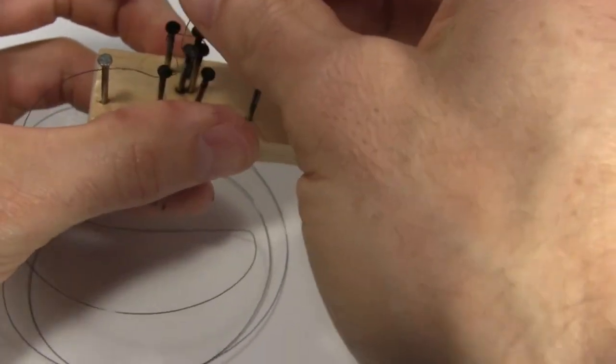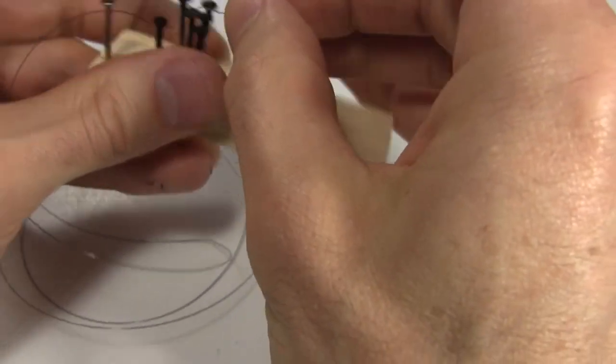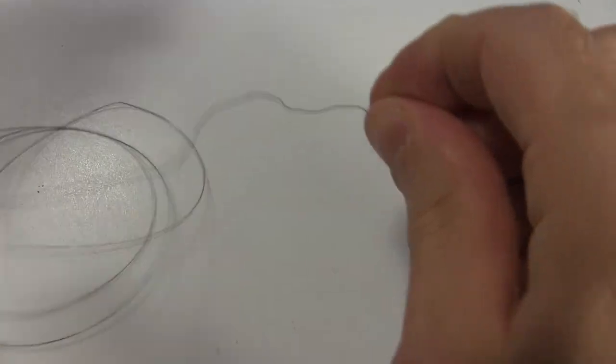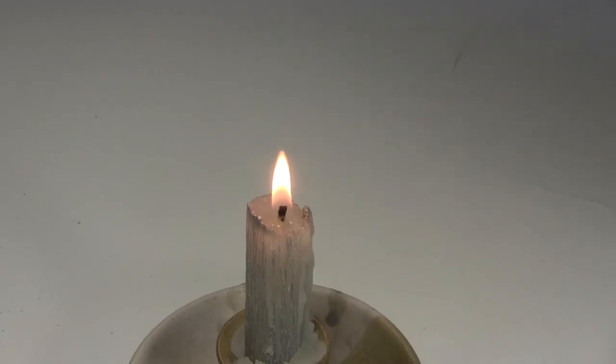I then remove it from the jig. The R shape is now programmed in. I straighten out the wire, and to make it go back to its programmed shape,